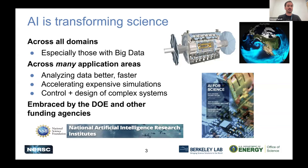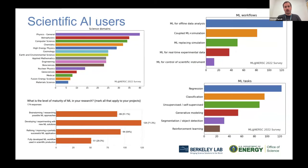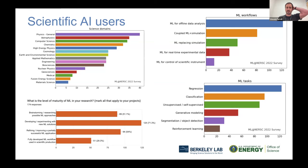Funding agencies are also really embracing AI — there've been a number of calls in the last few years and we anticipate more to come. We find out what people in the science communities are doing through tracking on Perlmutter and through surveys. I have some plots from a previous survey from 2022. A little bit later I'll have a link to the ongoing survey and I'll ask you to fill that out, especially if you're doing machine learning today.